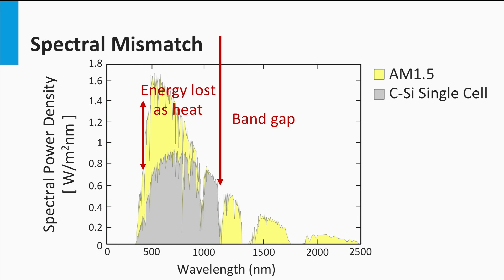Let's look at photons with energies higher than the band gap. We know that we effectively only need energy of the band gap to excite the mobile charge carrier. The electrons are excited to a level higher up in the band gap and the holes down to a lower level in the valence band, and they will quickly relax back to the edges of both bands. The rest energy is released as heat. The gray area represents the total amount of energy in the solar spectrum used to excite the charge carriers, while the yellow area above the band gap represents the energy lost as heat. All energy present in the solar spectrum below the band gap is not absorbed and can be considered as an optical loss as well.